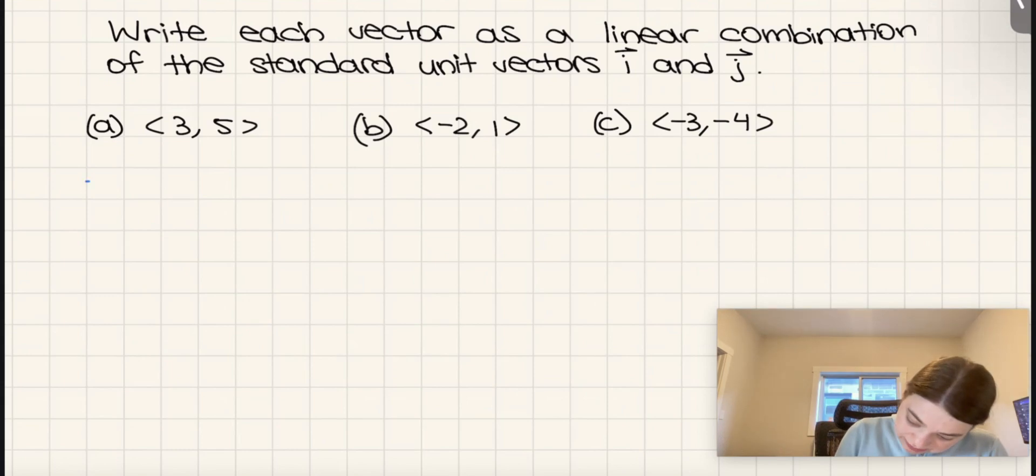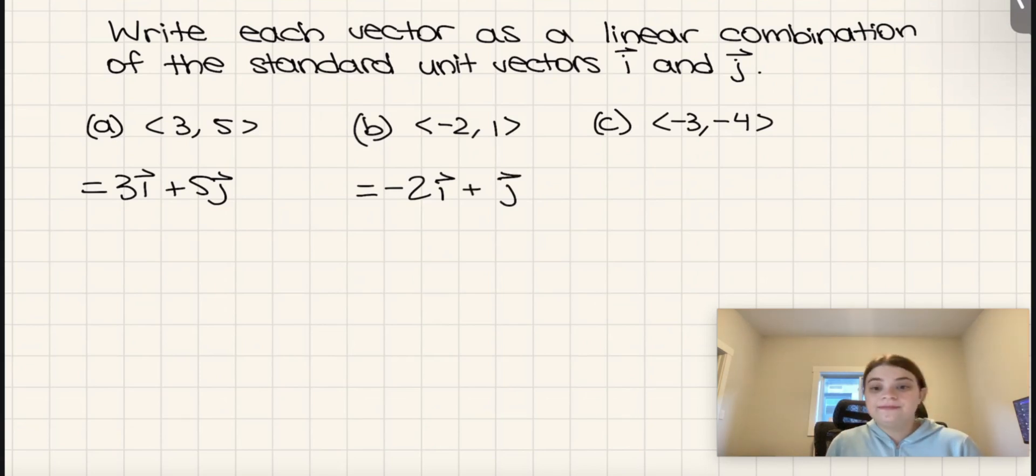So this one would just be 3i plus 5j. This one would just be negative 2i plus 1j, or just plus j. And then the third one would be negative 3i minus 4j.